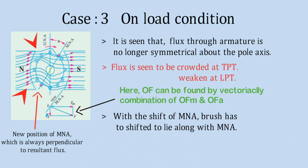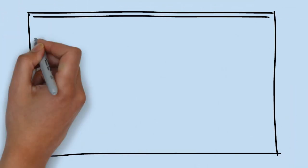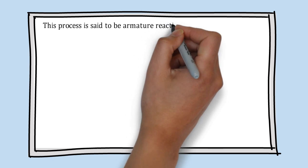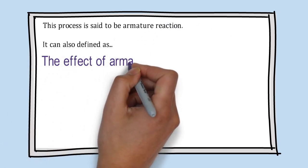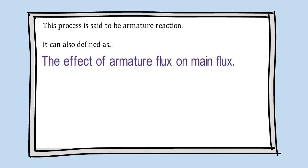This whole process of interacting of flux is said to be armature reaction. It may also be defined as effect of armature flux on main flux. As a result, mainly two effects will be generated.